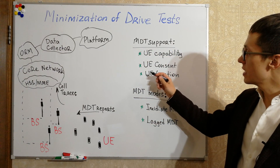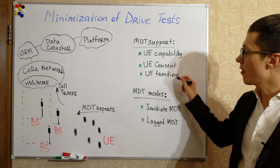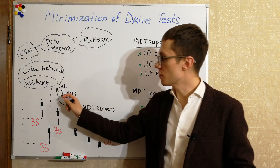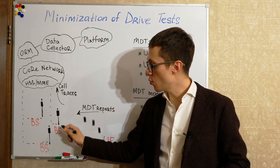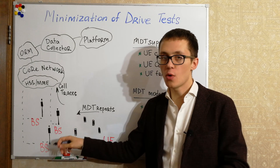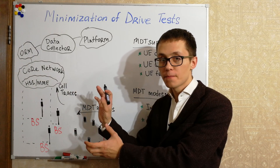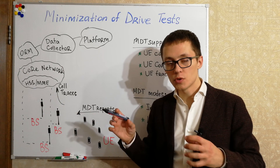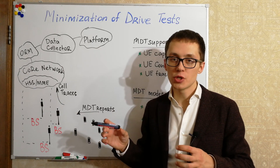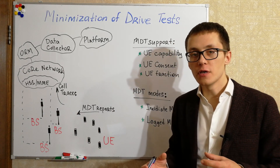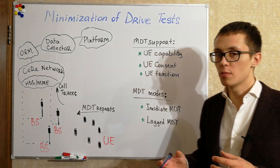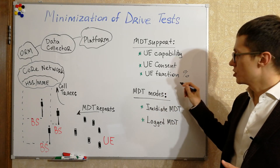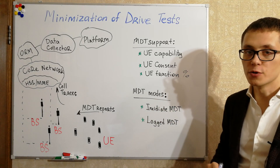The next step is user equipment fraction. When we configure cell traces in our base stations and area, we can configure the system to collect information not from every capable UE, but only from a certain percentage of users.